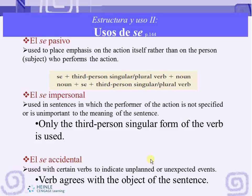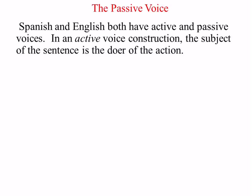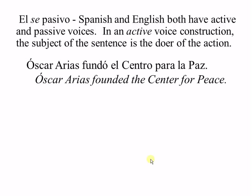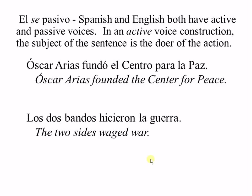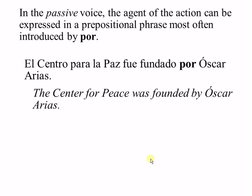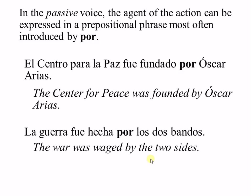Let's start with el se pasivo. Before we understand el se pasivo, it's a good idea to understand the passive voice. Spanish and English both have active and passive voices. In an active voice construction, the subject of the sentence is the doer of the action. For example, Oscar Arias fundó el centro para la paz — he's the one who performed the action. Los dos bandos hicieron la guerra. In the passive voice, the agent of the action can be expressed in a prepositional phrase most often introduced by por. For example, el centro para la paz fue fundado por Oscar Arias. La guerra fue hecha por los dos bandos.